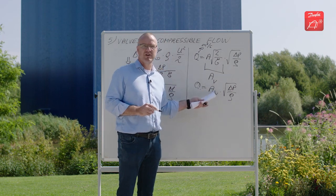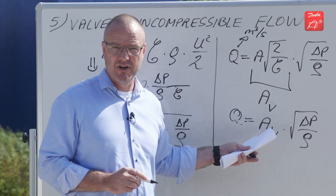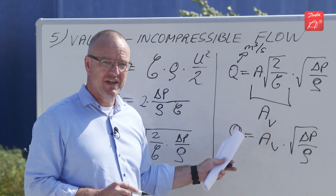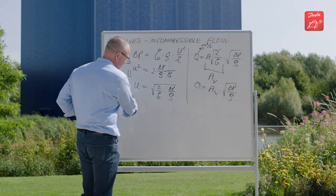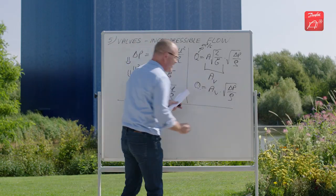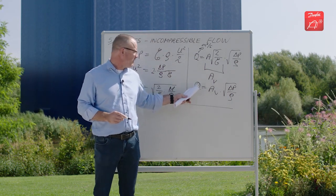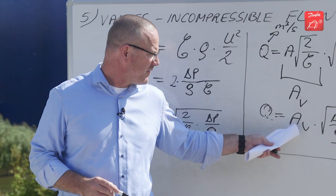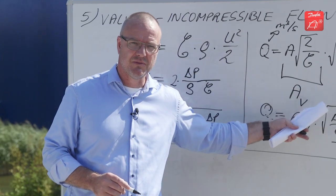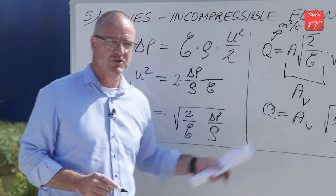Normally this flow coefficient is called KV, or if you're in the US, CV, but that's simply a matter of units. We can create a table where we express the volume flow, the flow coefficient, and delta P over rho, depending on the unit system you use.